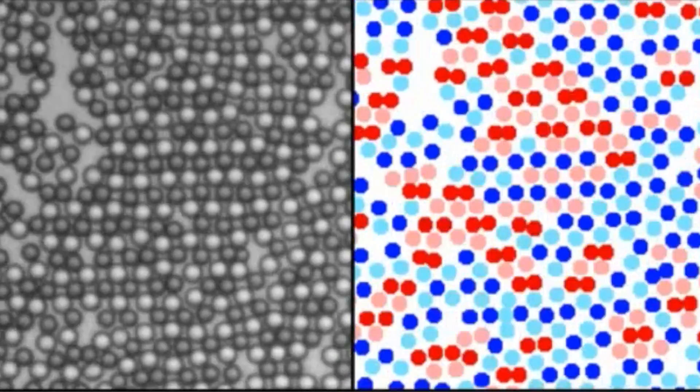One such phase transition is called a martensitic transformation, which is commonly observed in steel and is used to increase its strength when it cools very fast. Here you can see how our system closely resembles the crystal patterns made during this martensitic transformation.